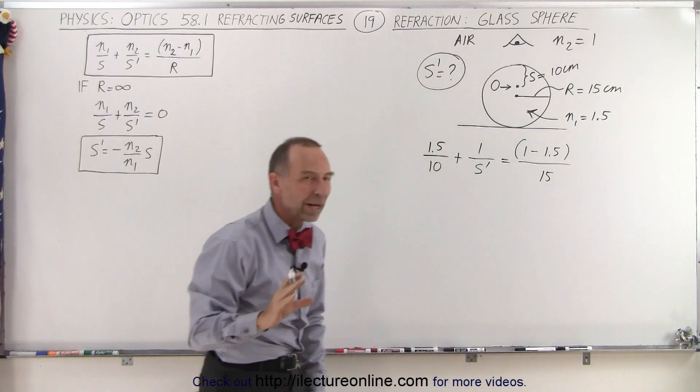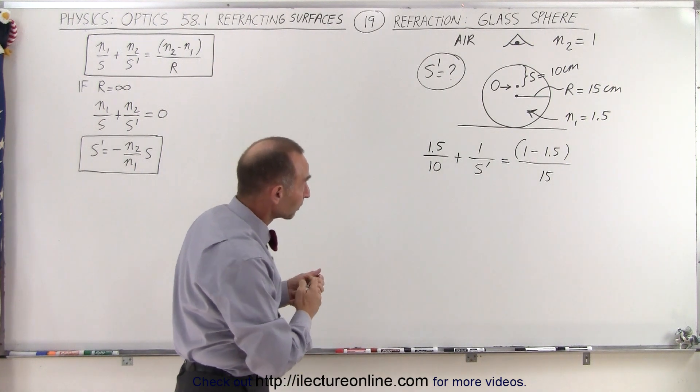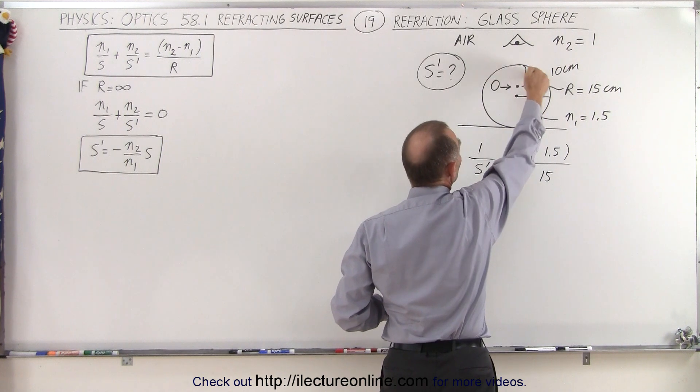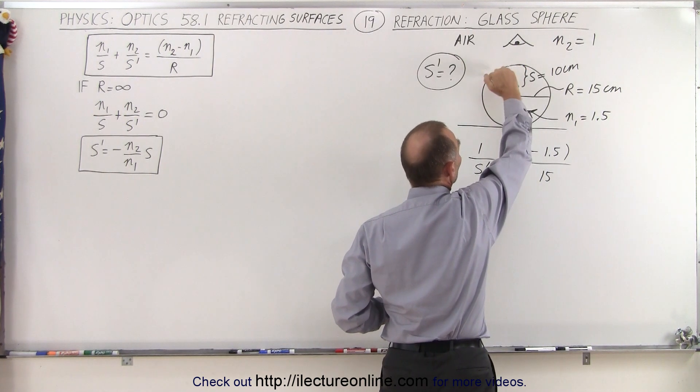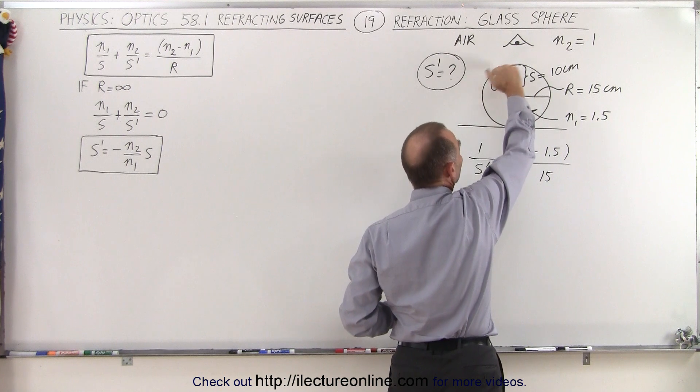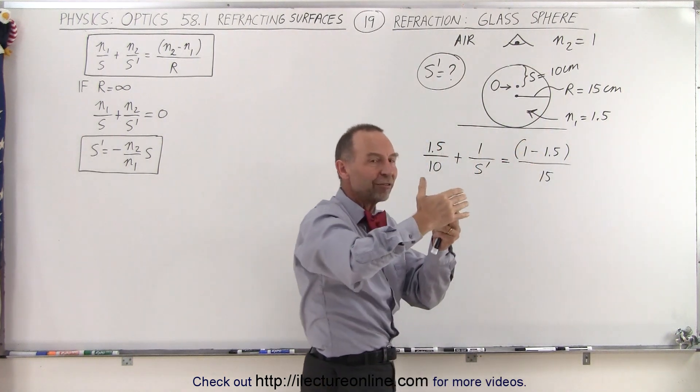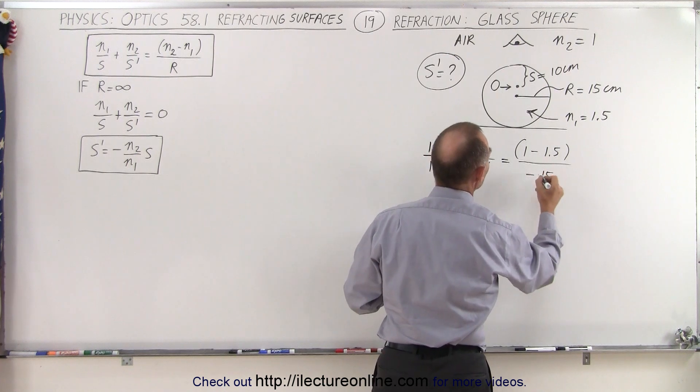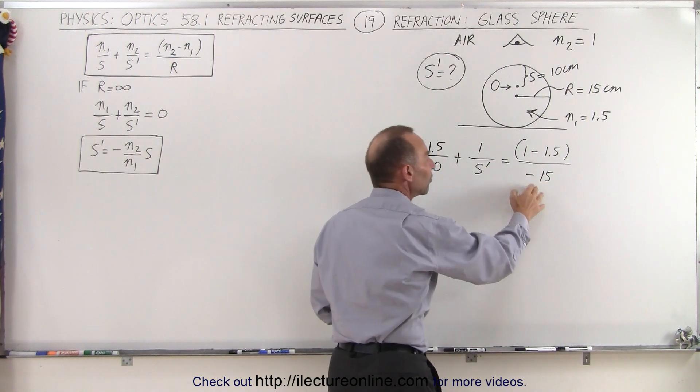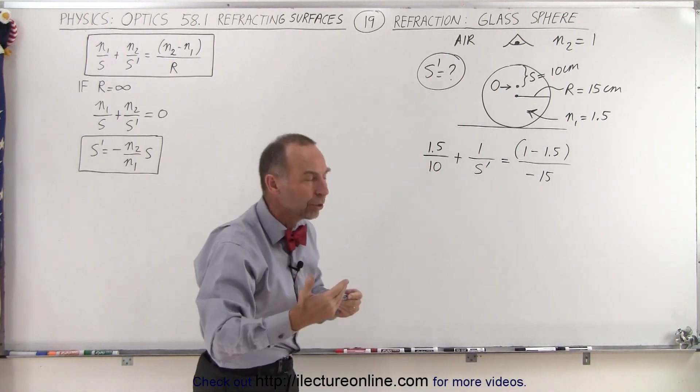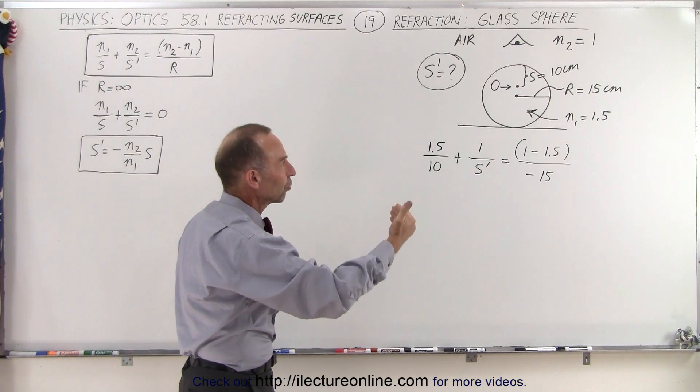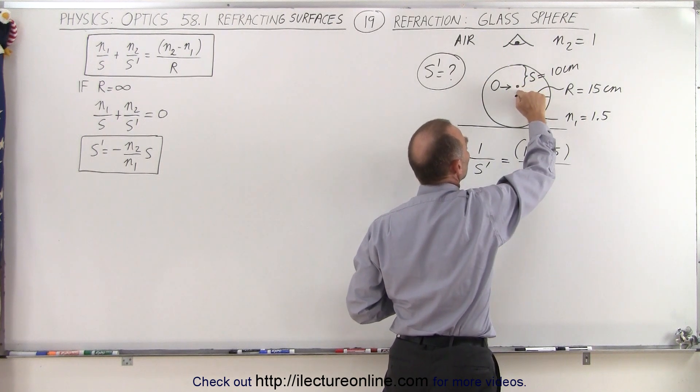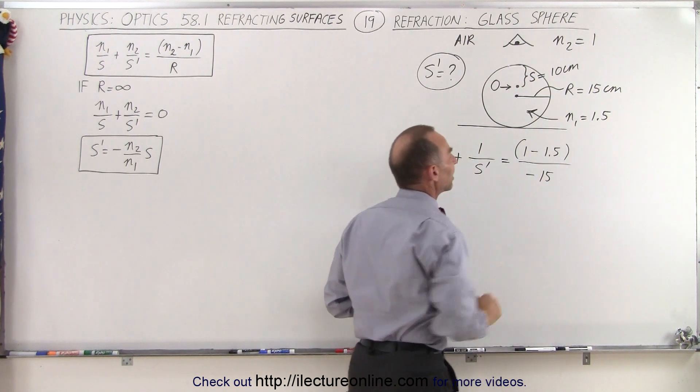Now the sign of the radius is determined as follows. Relative to the object, the surface is bulging away, so it's what we would call concave. It's curved away from the object, so therefore the sign here is going to be negative. The sign of the radius is always dependent upon the position of the object relative to the surface. You can see that the surface is concave rather than convex towards the object, so therefore it's a negative radius of curvature.